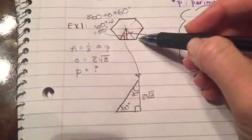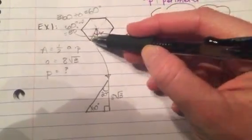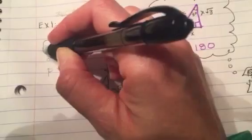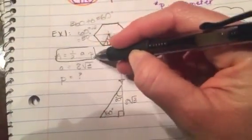So we are continuing with this example here, Example 1. If we can figure out the length of this side, we have the perimeter. According to the formula, we just need the apothem, which is given here, and the perimeter.